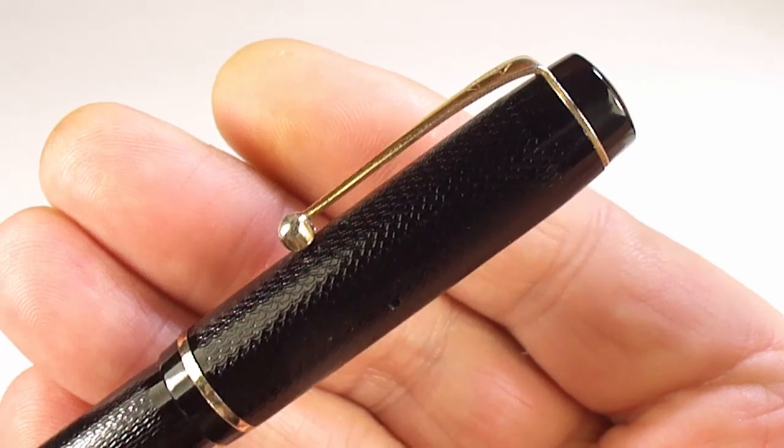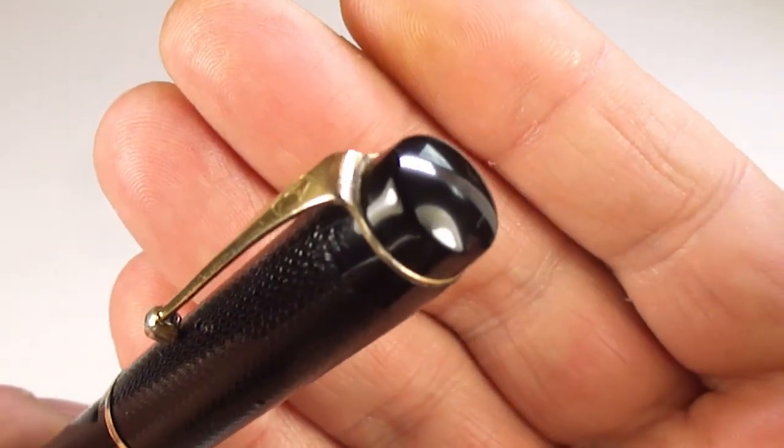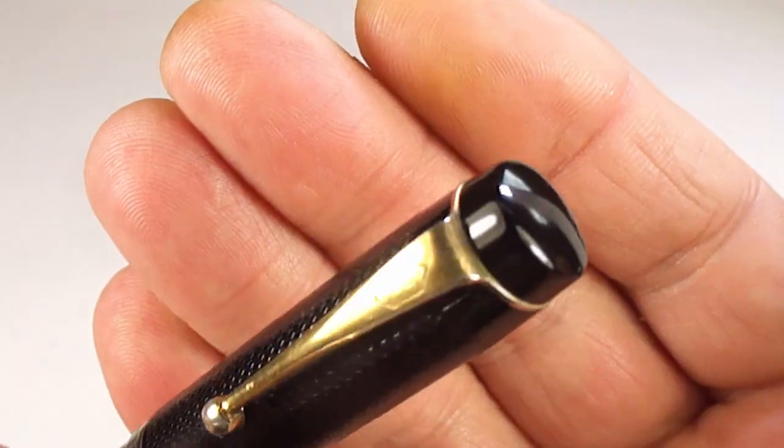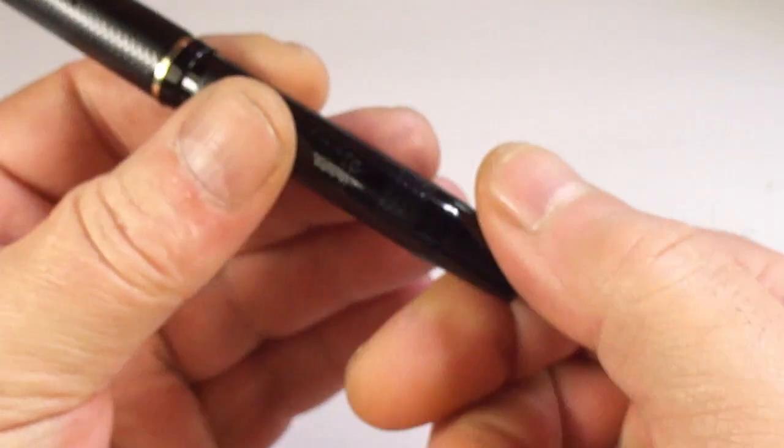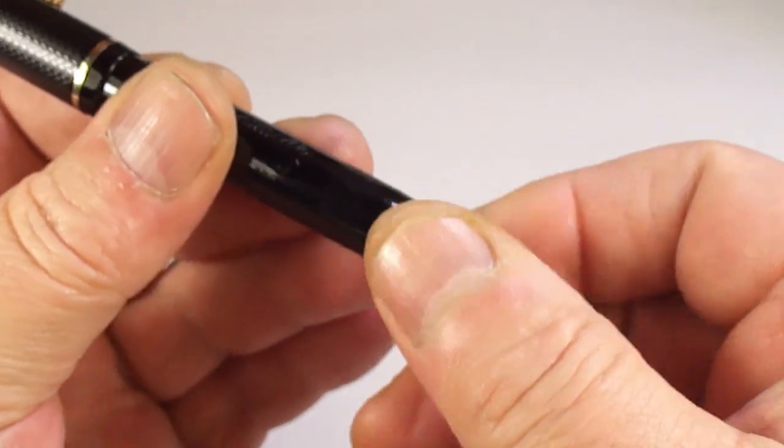As you can see, it's a ball clip. And you can see to the top there now, as opposed to being discolored, the top of it is lovely and black as it should be. Now, this one is what we term as a button filler.